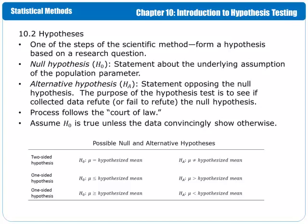Just like the prosecutor in a trial is trying to collect evidence to show that an individual is guilty. The underlying assumption in the court of law is that the person is innocent until proven guilty. The underlying assumption in hypothesis testing is that the null hypothesis is true unless it can be proven false.